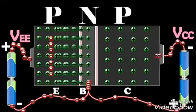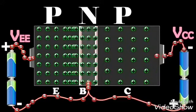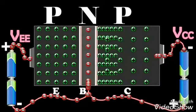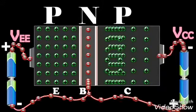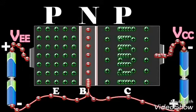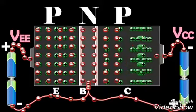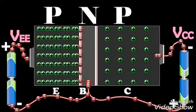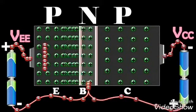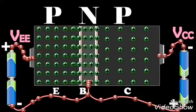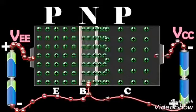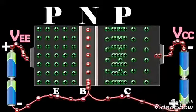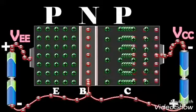In the emitter, IE is due to the flow of holes. But in the external circuit, the current is due to the flow of electrons from the emitter to the positive terminal of the battery VEE. The holes then diffuse through the base.